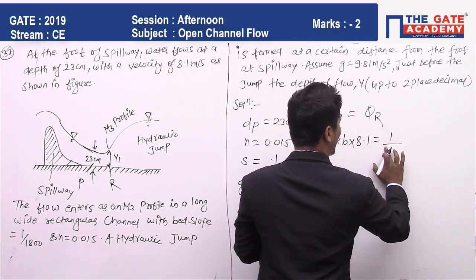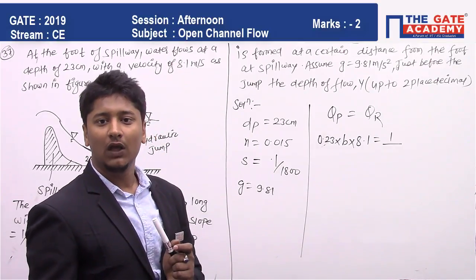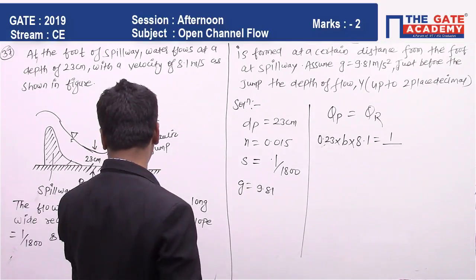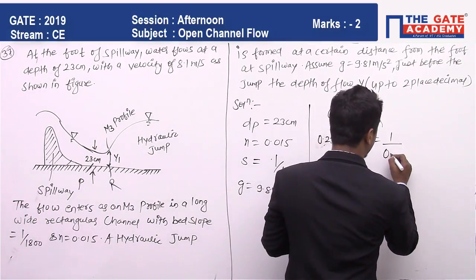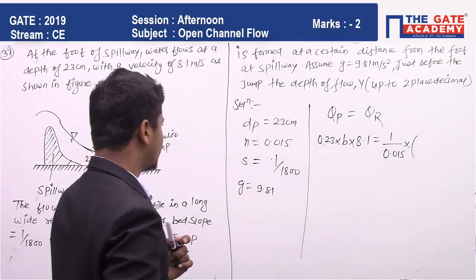That equals 1/n. I'm writing Manning's equation for velocity: 1/n × R^(2/3) × S^(1/2). So 1/n where n = 0.015, times R. R is hydraulic radius.